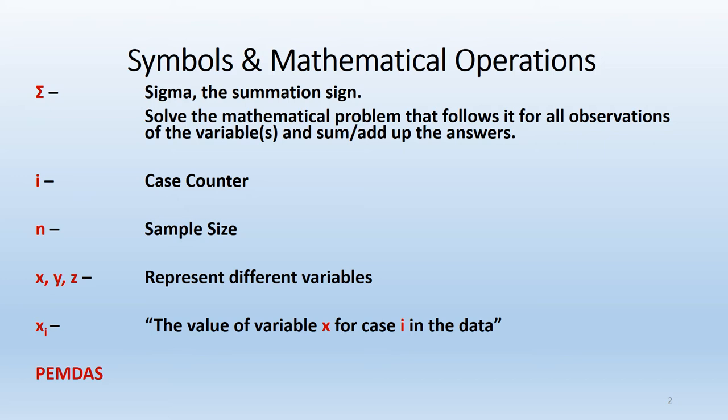When we see that sigma sign before a mathematical formula with something like x sub i, it's telling us to put the value of variable x for person one into the formula, solve it, get an answer, hold on to it, and do that for each observation in the data. Once you have all of your answers for person one, two, three, et cetera, you add or sum up all of those to get your final answer. That, in a nutshell, is how summation notation works.